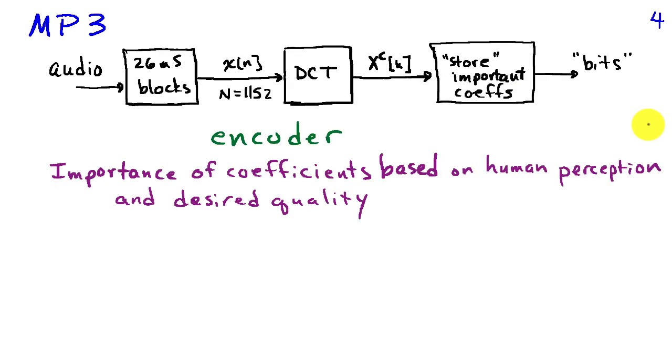MP3 format audio takes advantage of this property of the discrete cosine transform. And if we have an audio signal, the way we code it using MP3 is first to break it up into 26 millisecond blocks. And that leads to a capital N or a length for the signal of 1,152, assuming that we're working at 44.1 kilohertz sampling rate. And we take this 1,152 length signal, find the DCT coefficients, and then we look at those coefficients and we decide to only store the ones that are important. And we store those in terms of bits.